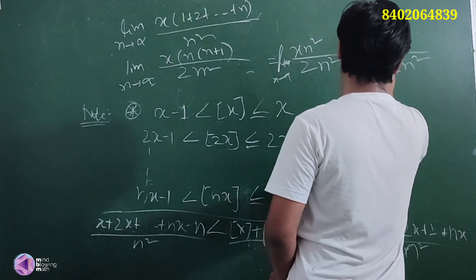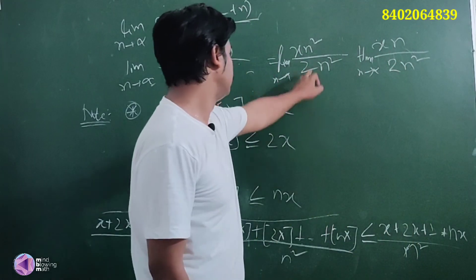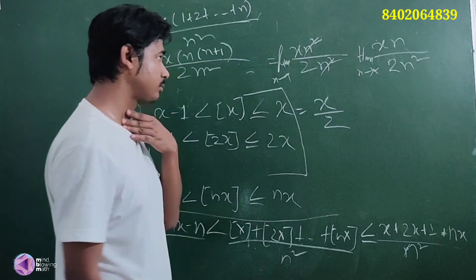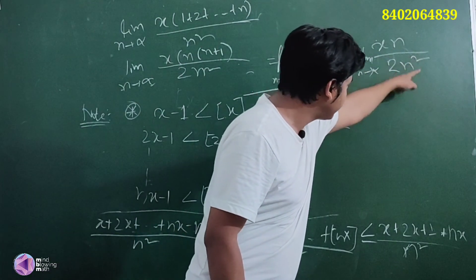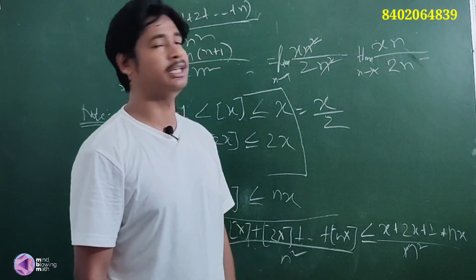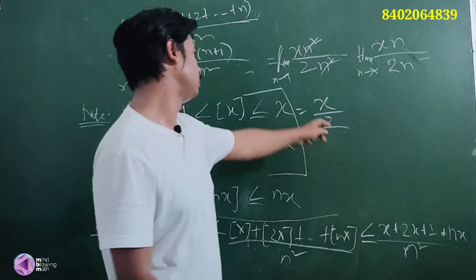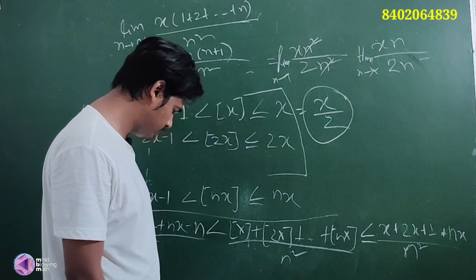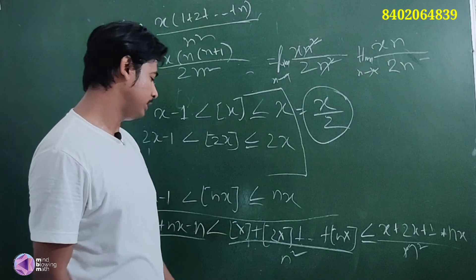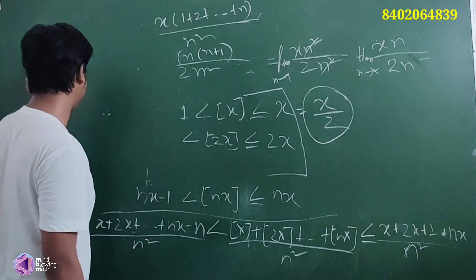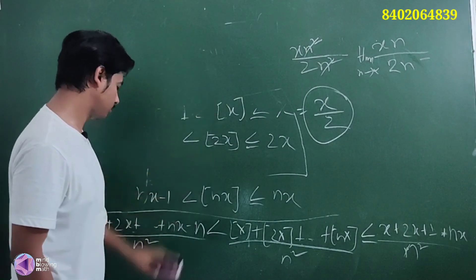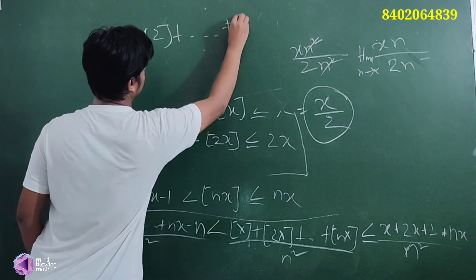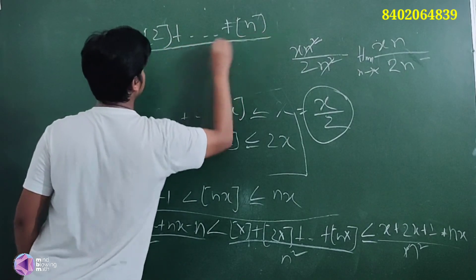As n tends to infinity, the n square terms cancel, leaving x/2. So the final answer is x/2. I think option C is correct. The same question: find the limit of greatest integer of 1 plus greatest integer of 2 up to greatest integer of n divided by n square.